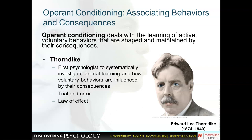Now we move on to operant conditioning, which means we learn active voluntary behaviors by linking them with their consequences. In simple terms, we learn to do certain things according to their consequences — we shape or alter our behavior accordingly. For example, a student who wants straight A's decides to study four hours every day. If the consequence is that they do get straight A's, they're more than likely going to continue that behavior. That's operant conditioning.